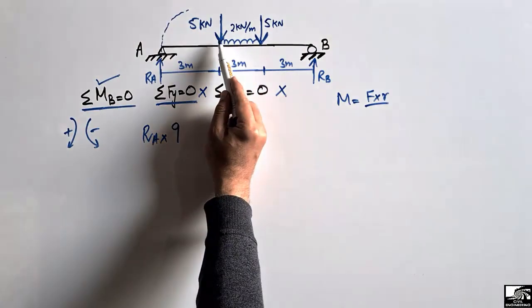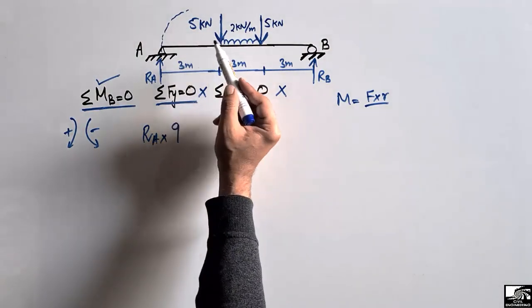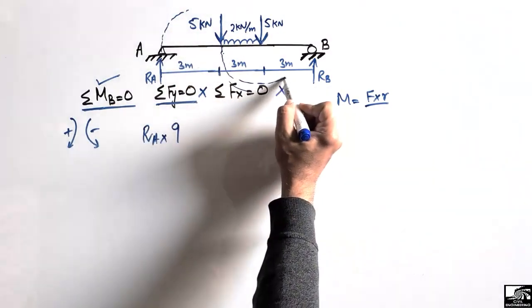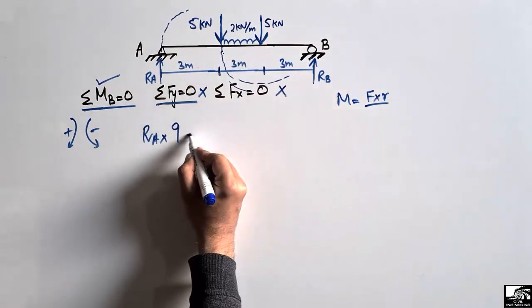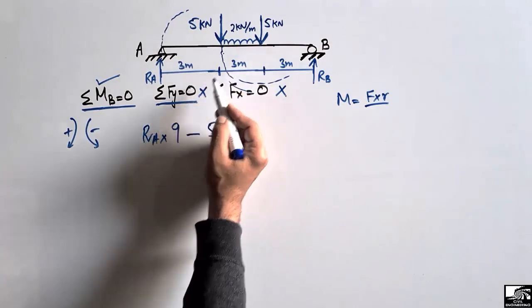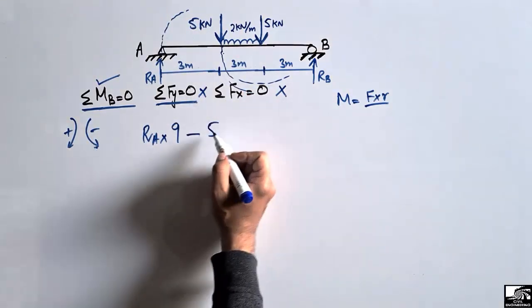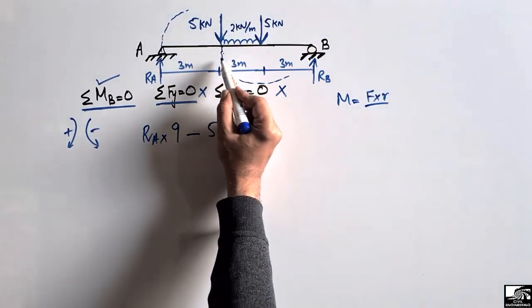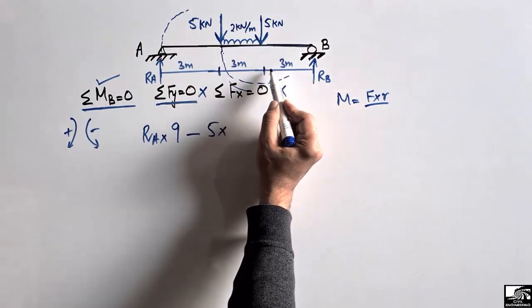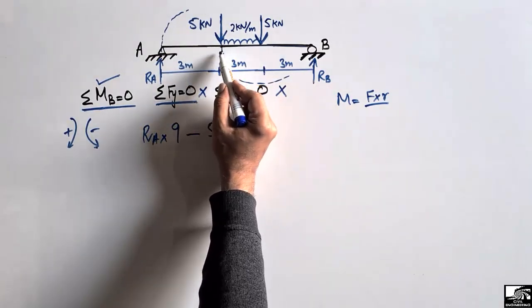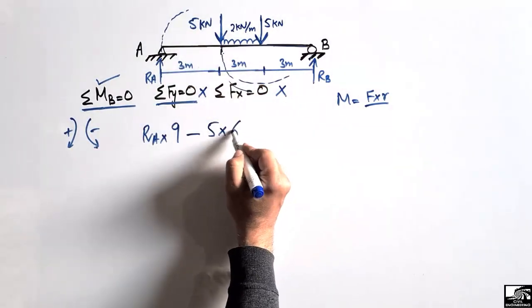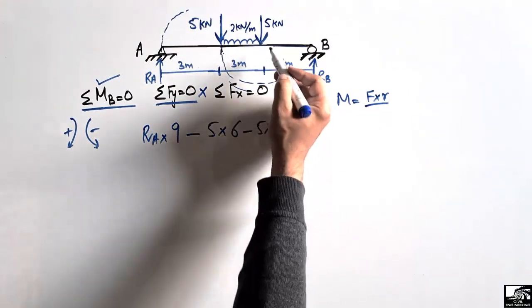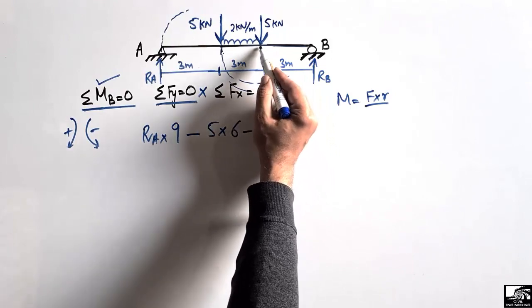The 5 kN point load creates an anti-clockwise moment about point B, so it is −5 × 6 m (the distance from that load to B is 3 m + 3 m = 6 m). The second 5 kN point load also creates an anti-clockwise moment, with a moment arm of 3 meters, so it is −5 × 3.